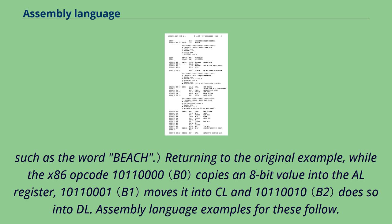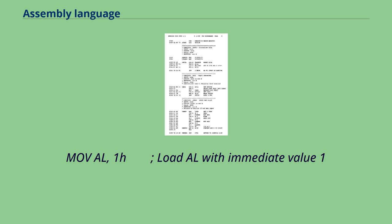Returning to the original example, while the x86 opcode 10110000 copies an 8-bit value into the AL register, 10110001 moves it into CL, and 10110010 does so into DL. Assembly language examples for these follow: MOV AL, 1h — load AL with immediate value 1; MOV CL, 2h — load CL with immediate value 2; MOV DL, 3h — load DL with immediate value 3.